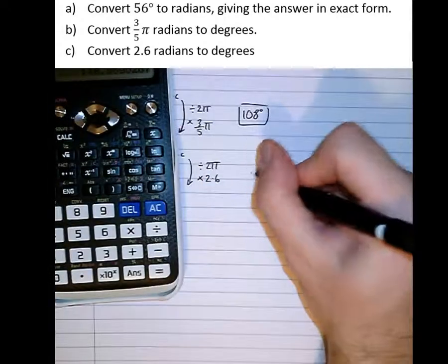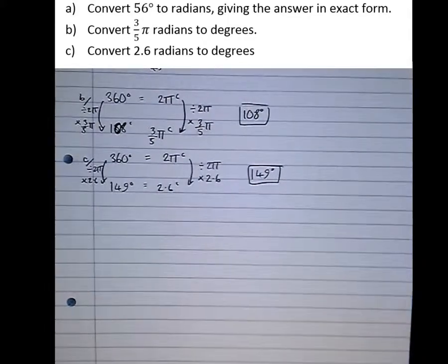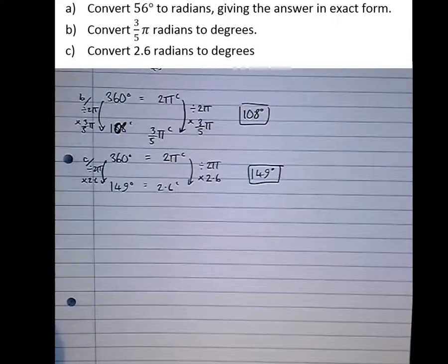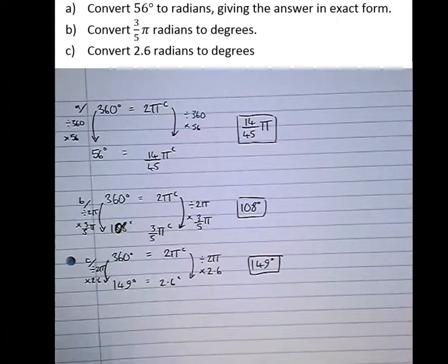Now it's more appropriate to round here because the answer wasn't asked for in exact form, so we can leave it as 149 degrees. So there's the conversion between degrees and radians and then back again.